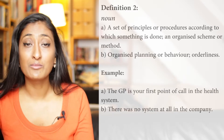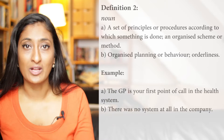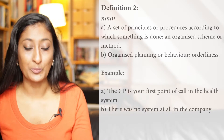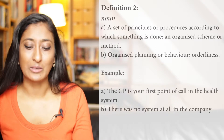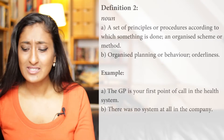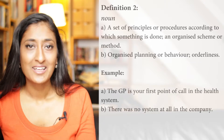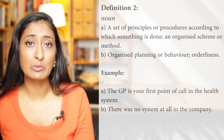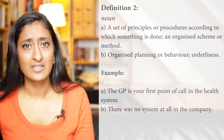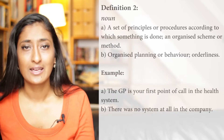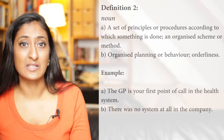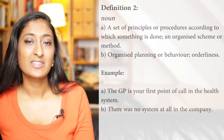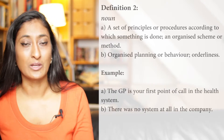Another way the word system can be used under the second umbrella definition is when you talk about organised planning or behaviour — orderliness. Here's an example sentence: there was no system at all in the company. Let's say somebody new started working there and found that all the paperwork that was supposed to be in place isn't. You can describe that workplace as being unorganised and therefore having no system at all.